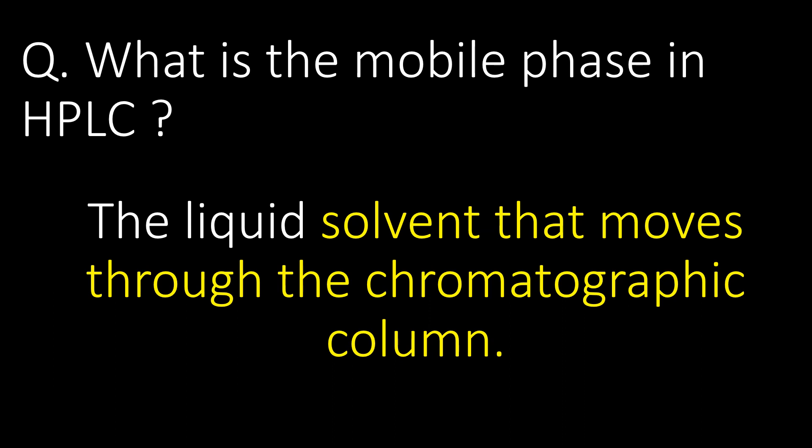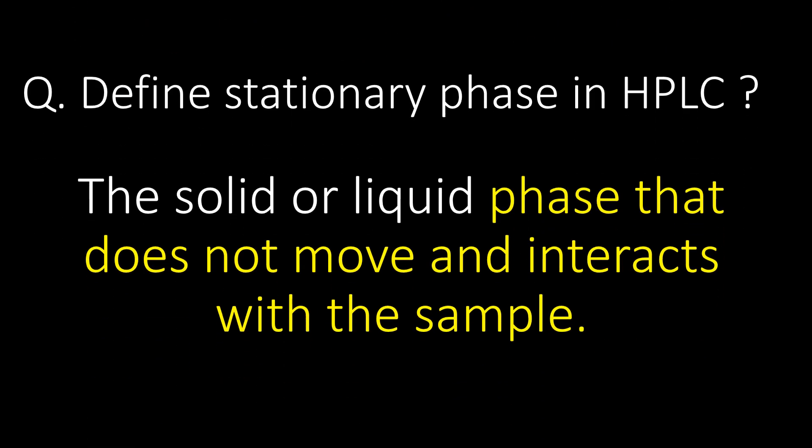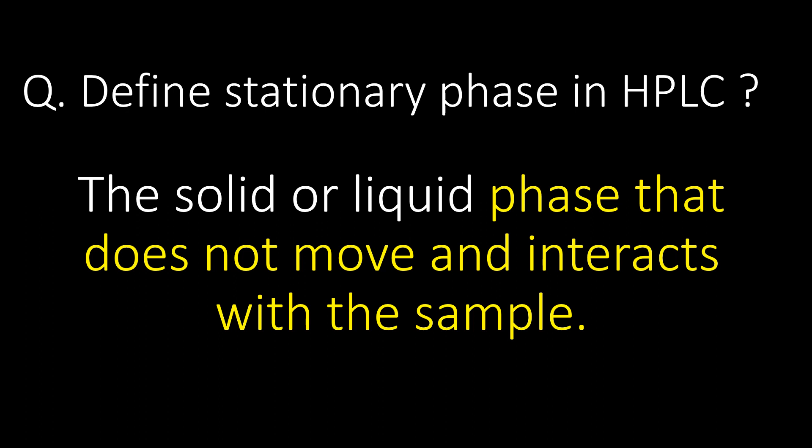What is the mobile phase in HPLC? The mobile phase in HPLC is the liquid solvent that moves through the chromatographic column. The stationary phase in HPLC is the solid or liquid phase that does not move and interacts with the sample.